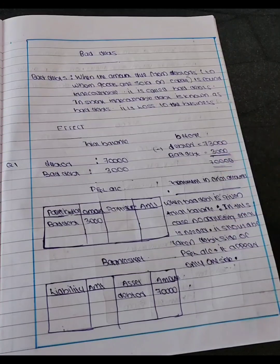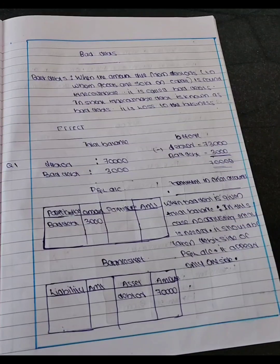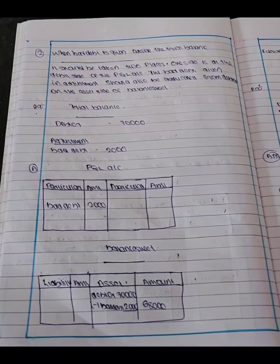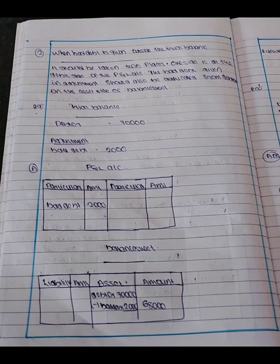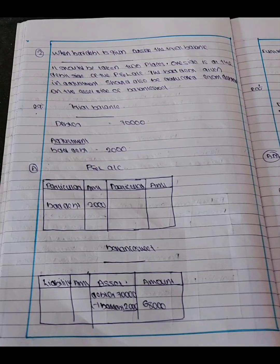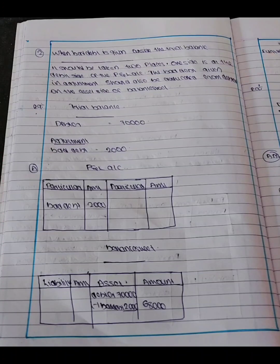What if bad debt is given outside the trial balance? It should be taken to two places: one, the debit side of the P&L account; and two, it should also be deducted from debtors on the asset side of the balance sheet.